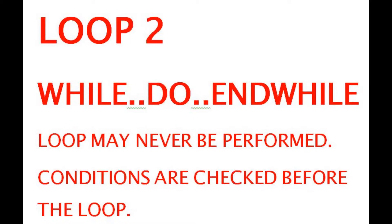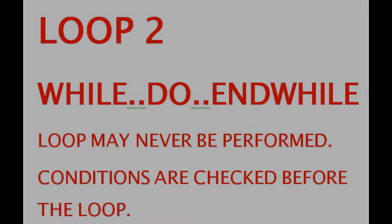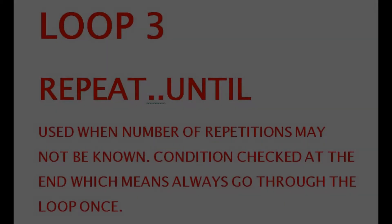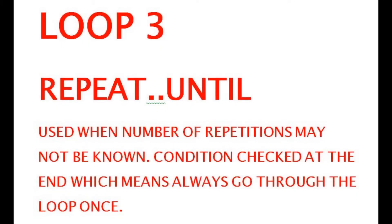The loop may never be performed and the conditions are checked before the loop. The final loop is repeat-until and is used when the number of repetitions may not be known. The condition is checked at the end, which means always go through the loop once.